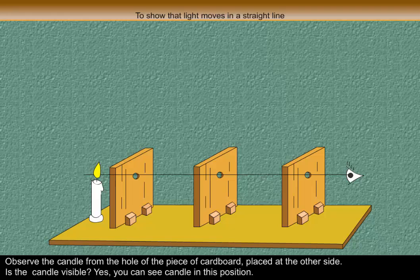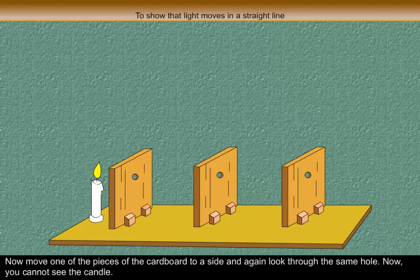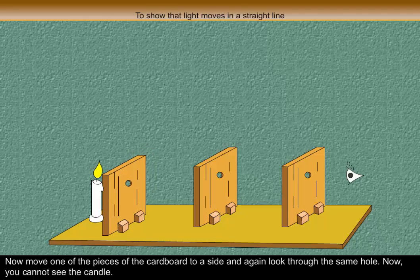Is the candle visible? Yes, you can see the candle in this position. Now move one of the pieces of the cardboard to a side and again look through the same hole. Now you cannot see the candle.